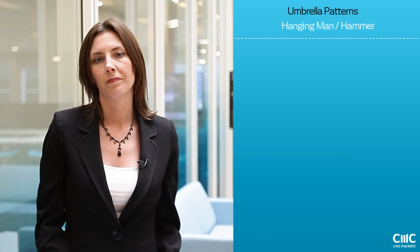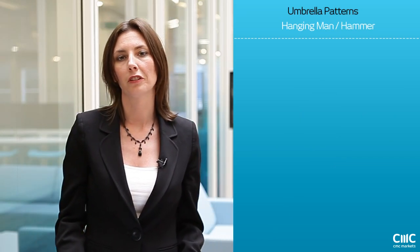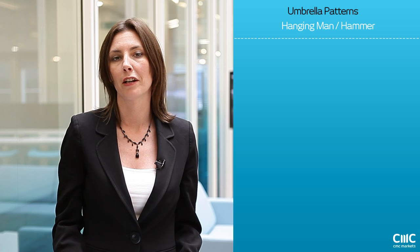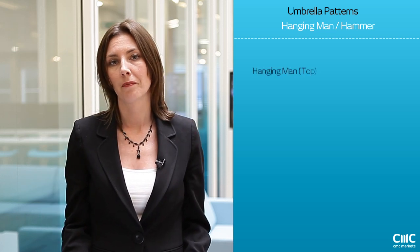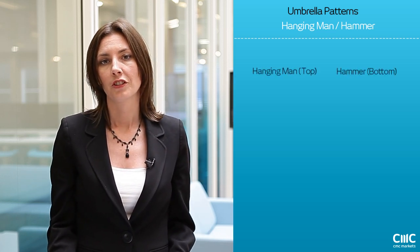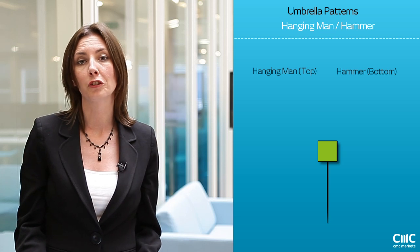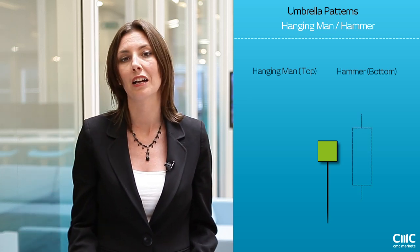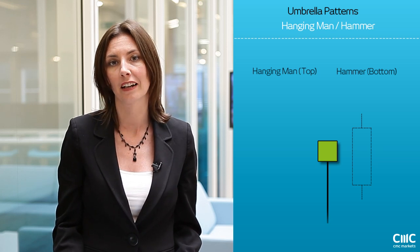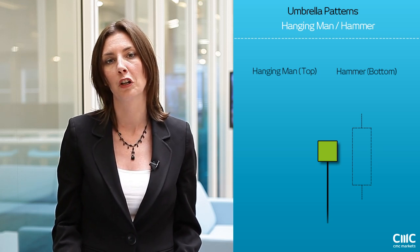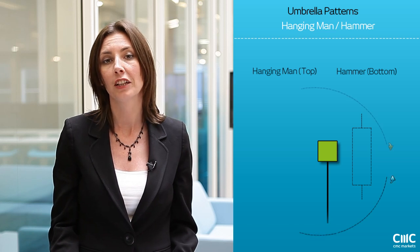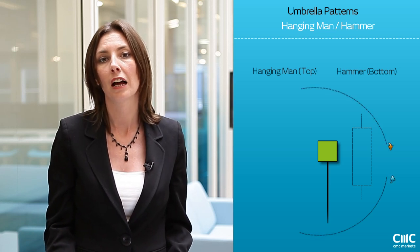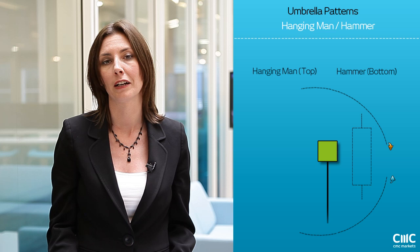As discussed earlier, there are two distinct patterns which come under the umbrella pattern: the hanging man and the hammer. Generally speaking, the color of these two patterns do not make much difference, but it's the next color that happens after them, in terms of the next candlestick session, that will give you a clue as to whether there is a proper trend reversal. This will give you an added confirmation as to what steps to take next in your trade.